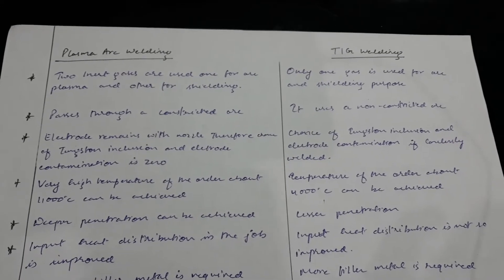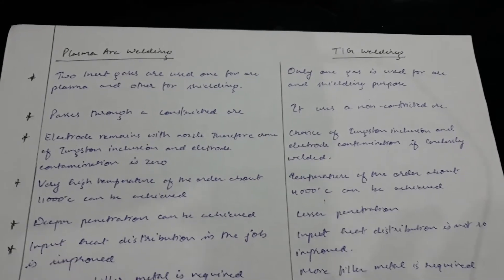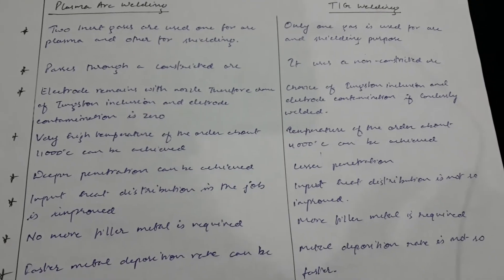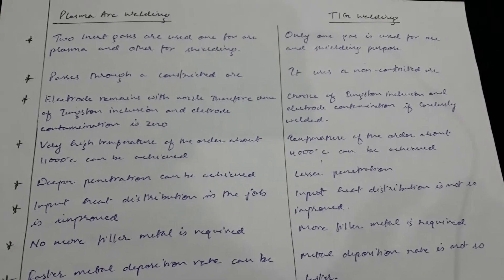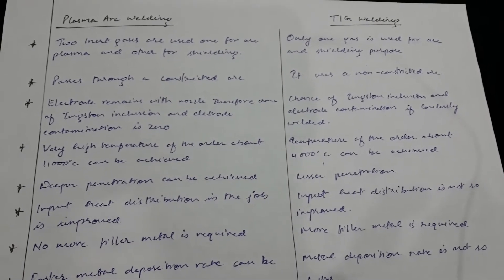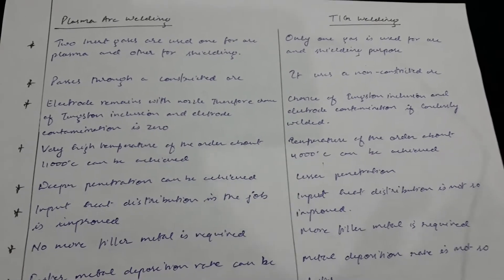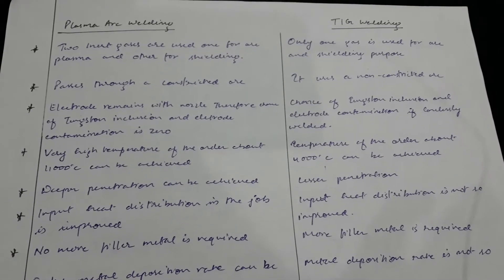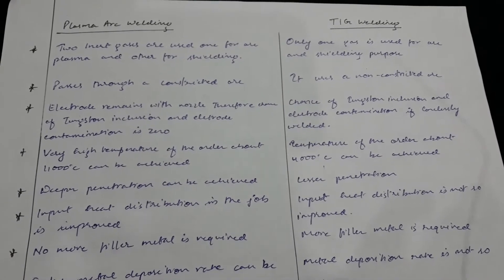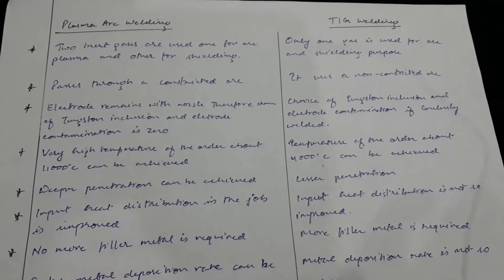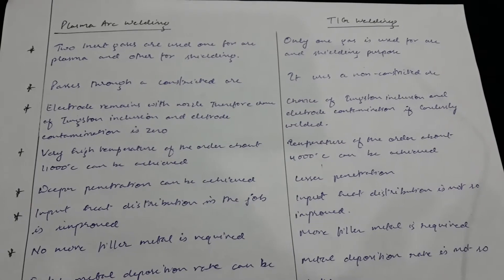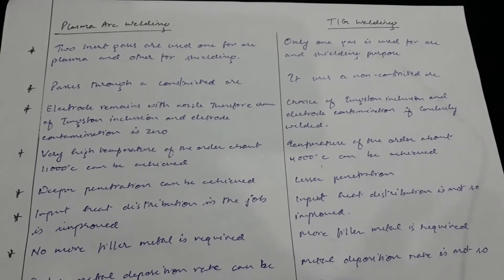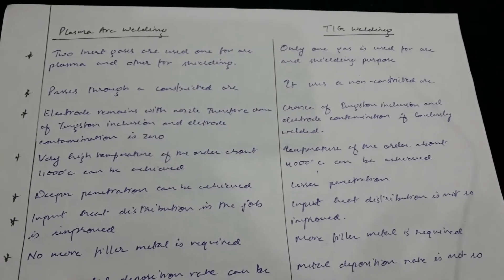In plasma arc welding, the plasma arc passes through a constricted area, whereas in tungsten inert gas welding it uses a non-constricted area.